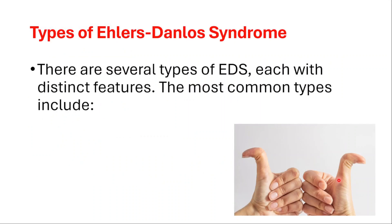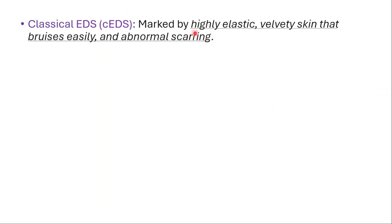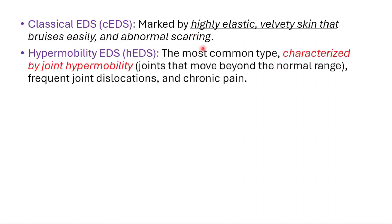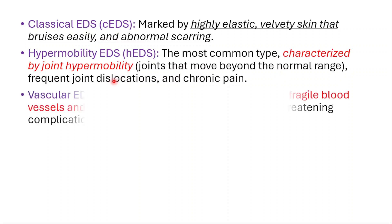Now let's talk about the types. There are several types, each with distinct features. The most common types are: Classical, marked by highly elastic, velvety skin that bruises easily and abnormal scarring. Hypermobility, the most common type, characterized by joint hypermobility — joints that move beyond the normal range — frequent joint dislocations, and chronic pain.